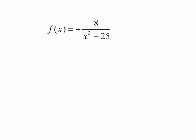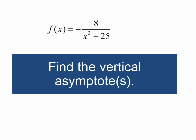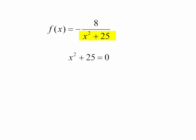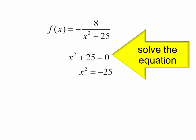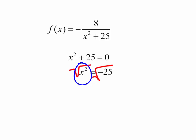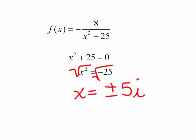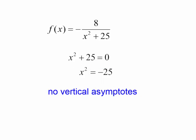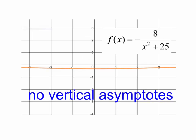Let's do one more. I have the function negative 8 over x squared plus 25, and I want to find the vertical asymptotes. I look at the denominator and ask when is it equal to 0. Subtracting 25 from both sides gives x squared equals negative 25. Can you ever square anything and get a negative number? No — x equals plus or minus the square root of negative 25, which is imaginary. There are no vertical asymptotes, and we can confirm this by looking at the graph.